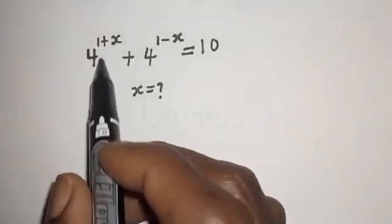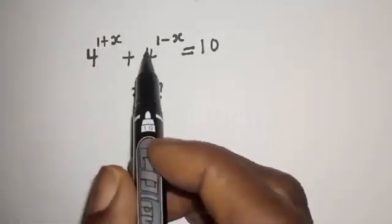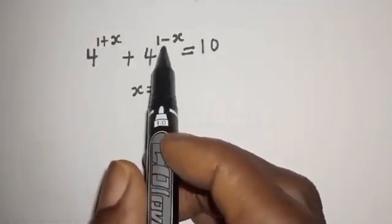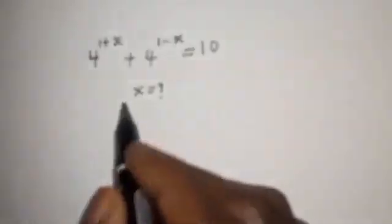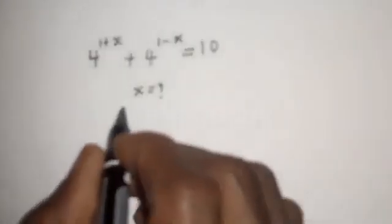4 raised to power (1 plus x) plus 4 raised to power (1 minus x) is equal to 10. What is the value of x? Solution: